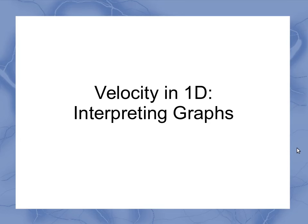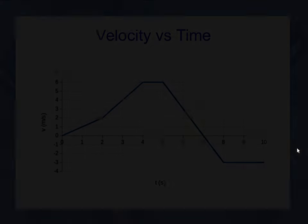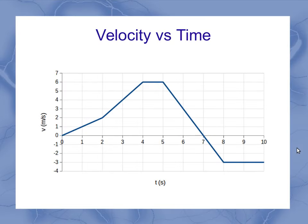Now we can start looking at interpreting our velocity graphs. I'm going to start with a fairly simple one. It's a quick reminder again: positive velocities mean moving forward, negative velocities mean moving backwards.